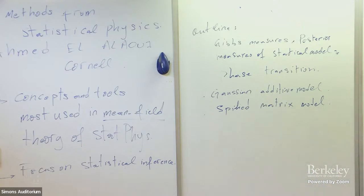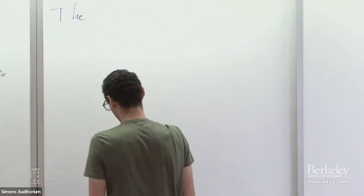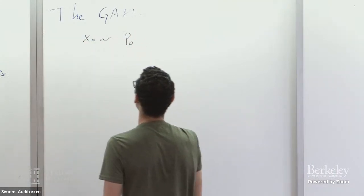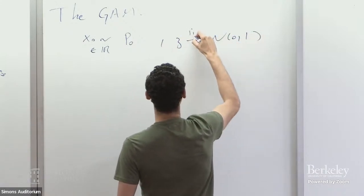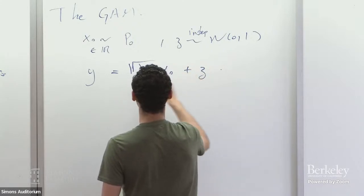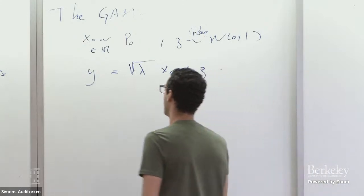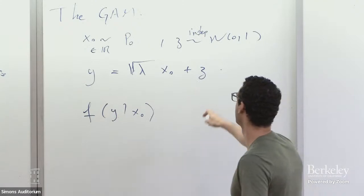Let me start with the Gaussian additive model in one dimension — I'll write GAM for short. Here we have a signal random variable x₀ drawn from some prior p₀, which is a real number. We draw a Gaussian z that is independent from x₀, and then observe y = √λ · x₀ + z, where λ is a fixed constant. We observe y and would like to understand what's going on with x₀. The density of y given x₀ is just a Gaussian density.